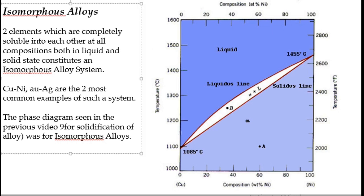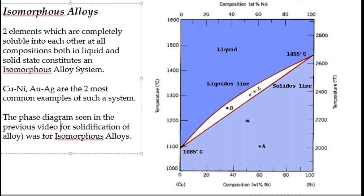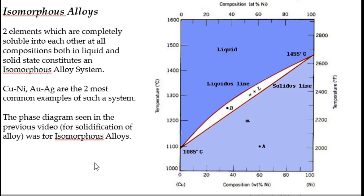There are different conditions which dictate whether two elements will form an isomorphous alloy system or not. That is part of solid solution theory—you can read it up in Callister. The phase diagram we saw in the previous video is for an isomorphous alloy system, which we discussed while covering the solidification mechanism of alloys.